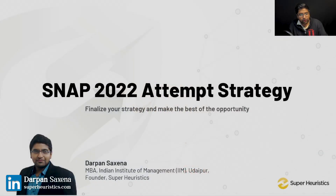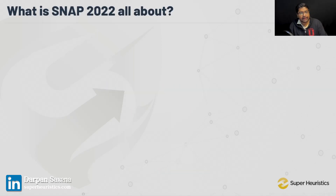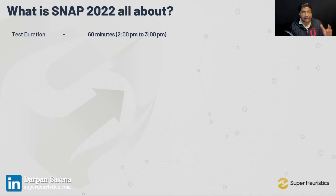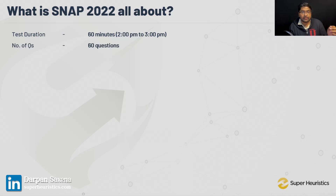So while you were watching my IIM Calcutta vlog series, I came back to my studio to record this for you — to let you know about what your attempt strategy for SNAP has to be. The duration of SNAP is 60 minutes; it's a one-hour exam from 2 p.m. to 3 p.m. The number of questions you will have in the exam is 60 questions — 60 questions to solve in 60 minutes.